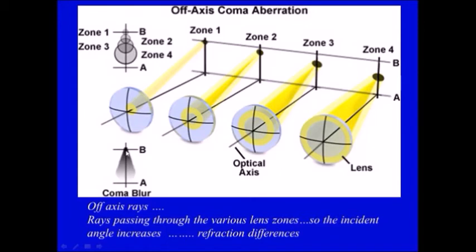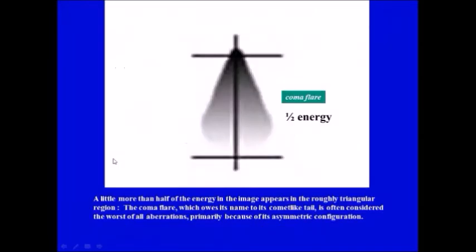So you get one bright area and less bright area. The problem is 50 percent of the energy is distributed away from where it should be in this area.